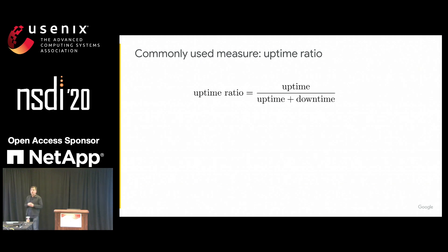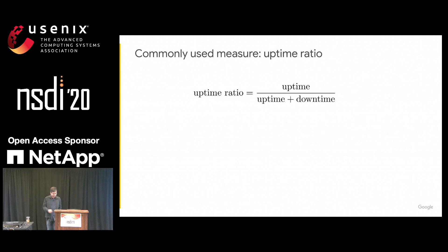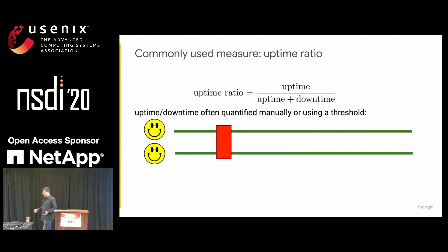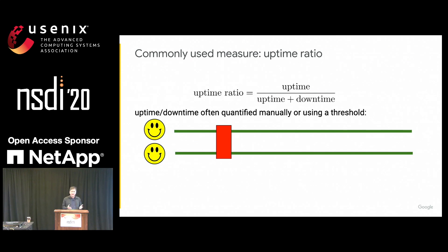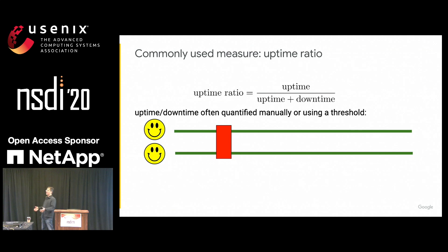Another metric that is also commonly used is uptime ratio. This is nice because it's in terms of time — the numerator is uptime and the denominator is total time. The problem is how do we measure when the system is up and when it's down? This is done in one of two ways: the reliability team manually quantifies the system as up or down, or a threshold is used — for example, if the system fails 5% of requests, we consider it down.